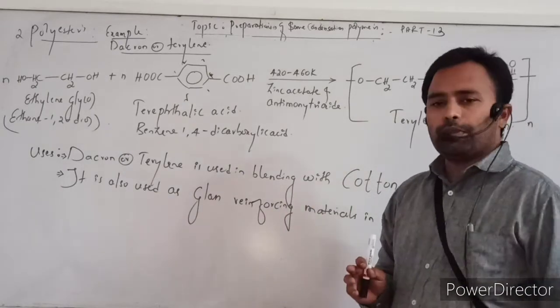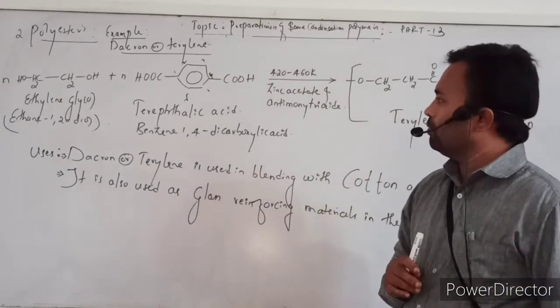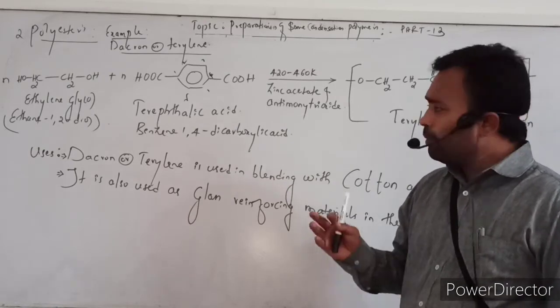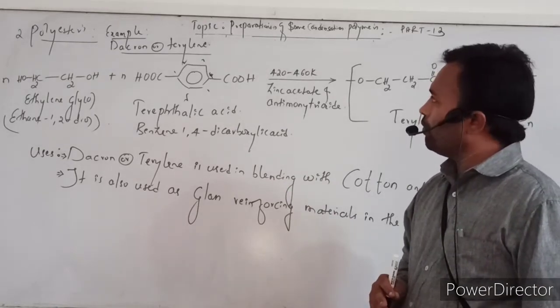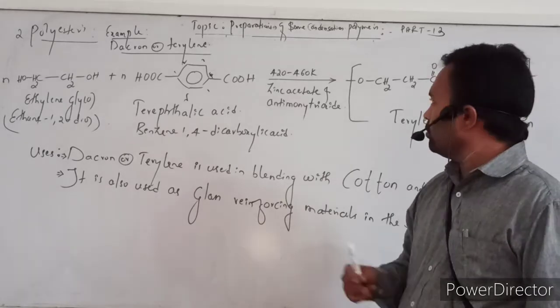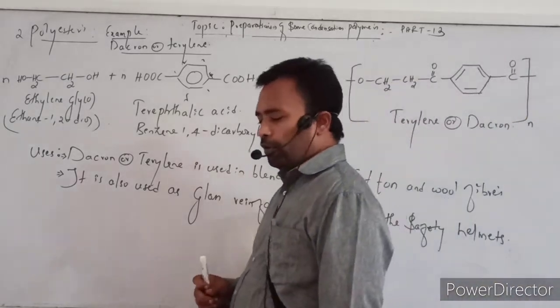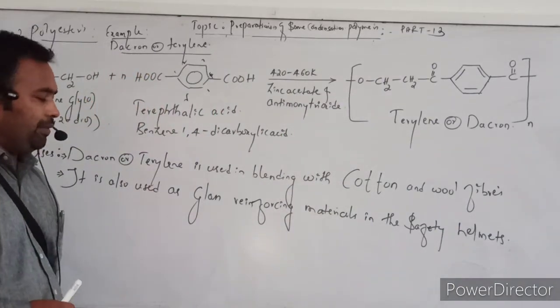What are the monomers used in the preparation of Terylene or Dacron? One is ethylene glycol and another is terephthalic acid. Name the catalyst used in the preparation of polyester Dacron: zinc acetate and antimony trioxide. What is the temperature condition? 420 to 460 Kelvin.